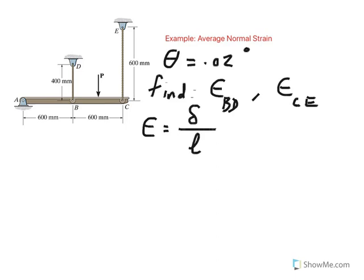So if I could find out how much this wire BD and wire CE are going to deflect or stretch, that would be delta. All I have to do is to divide that by its initial length, which is either 400 for BD or 600 for CE.